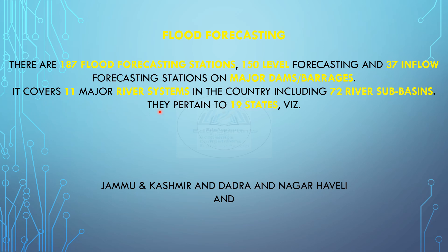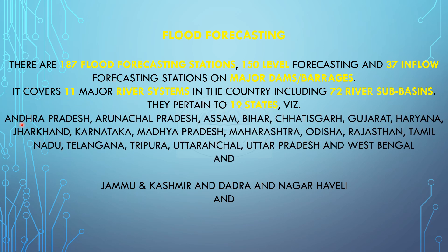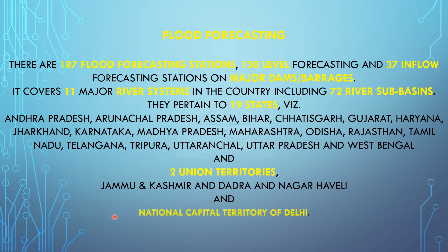The flood forecasting network covers 11 major river systems including 72 river sub-basins, pertaining to 19 states: Andhra Pradesh, Arunachal Pradesh, Assam, Bihar, Chhattisgarh, Gujarat, Haryana, Jharkhand, Karnataka, Madhya Pradesh, Maharashtra, Odisha, Rajasthan, Tamil Nadu, Telangana, Tripura, Uttarakhand, Uttar Pradesh, and West Bengal, and two union territories — Jammu & Kashmir and Dadra & Nagar Haveli — as well as the National Capital Territory of Delhi.